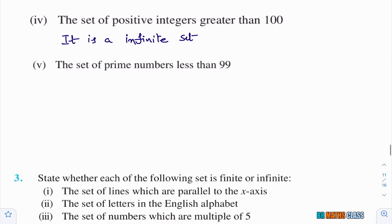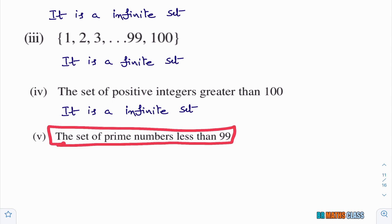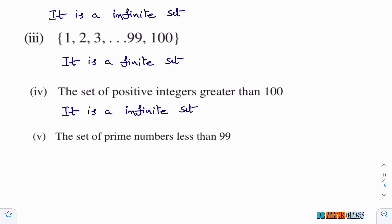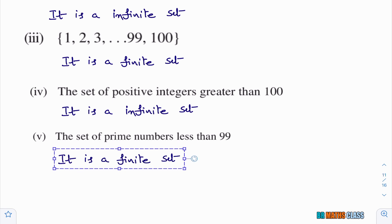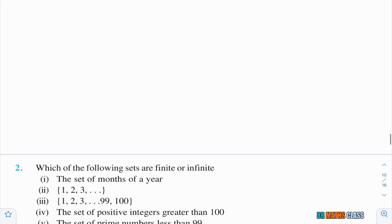Fifth bit: set of prime numbers less than 99. Prime numbers less than 99 — clearly it is a finite set. If they asked for prime numbers greater than 99 it would be a different case, but prime numbers less than 99 is a finite set.